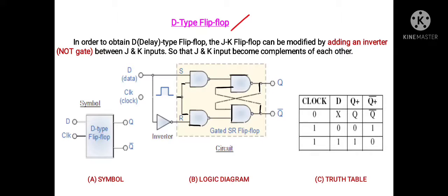Here, D stands for delay — we will discuss this word after due explanation. In order to obtain a D-type flip-flop, the JK flip-flop can be modified by adding an inverter, or NOT gate, between the J and K inputs. As in the JK flip-flop, the first input is J and the second is K. In the circuit you can see clearly that between the J and K inputs there is one NOT gate or inverter, due to which J and K inputs are complements of each other.